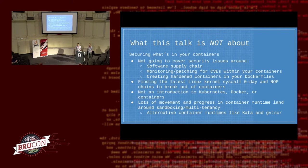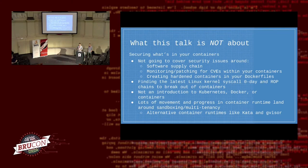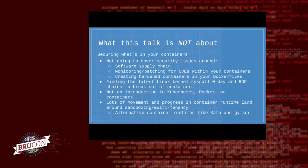First I want to set a scope for what this talk is not about. We're not going to cover the software supply chain about your containers — there have been a lot of other talks that go into detail about Docker files and securing those dependencies. We're also not going to talk about container breakouts that require elite O-Day kernel syscall vulnerabilities and crazy ROP chains. You don't need that. And this isn't really an introduction to Kubernetes and Docker containers — we'll assume some level of prior knowledge.